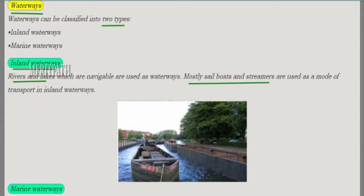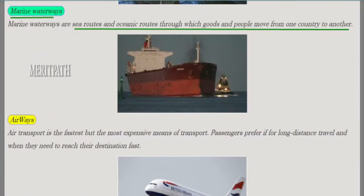Waterways can be classified into two types: inland waterways and marine waterways. Inland waterways use rivers and lakes that are navigable, with boats and steamers used as modes of transport. Marine waterways happen through sea routes and ocean routes, enabling movement of goods and people from one country to another.